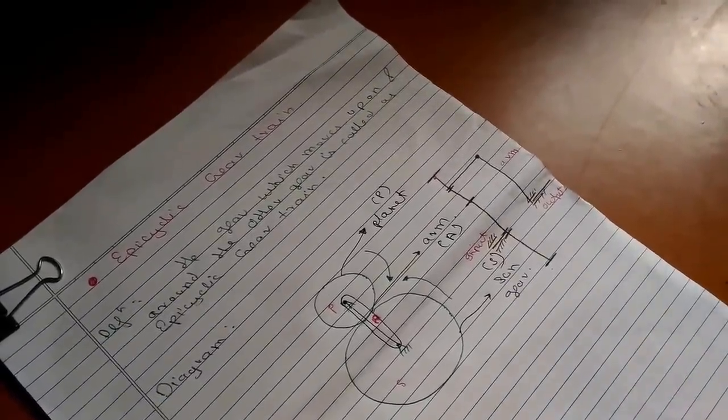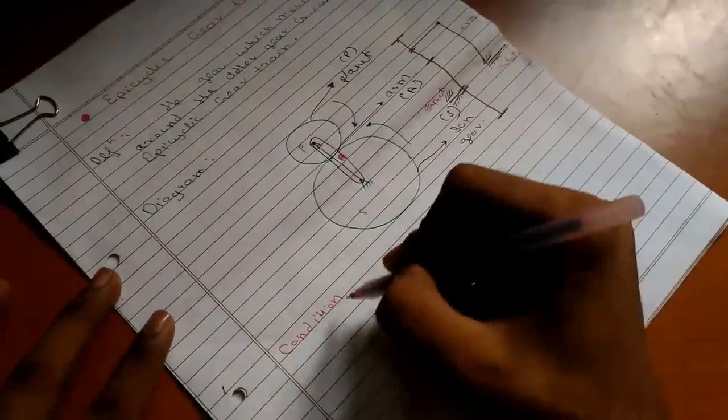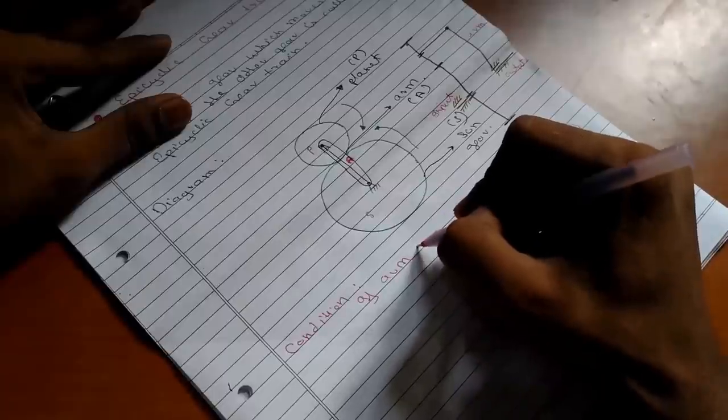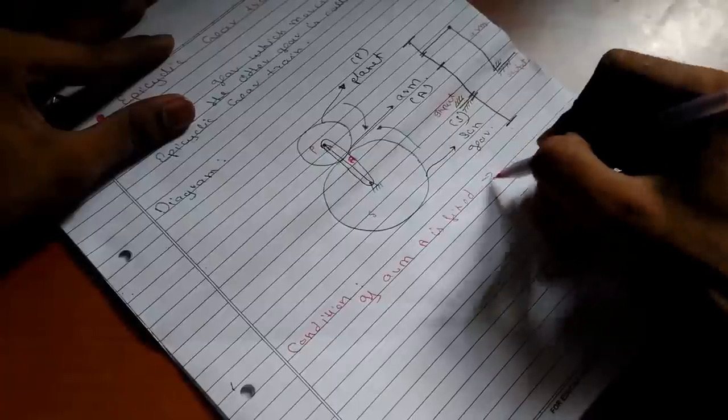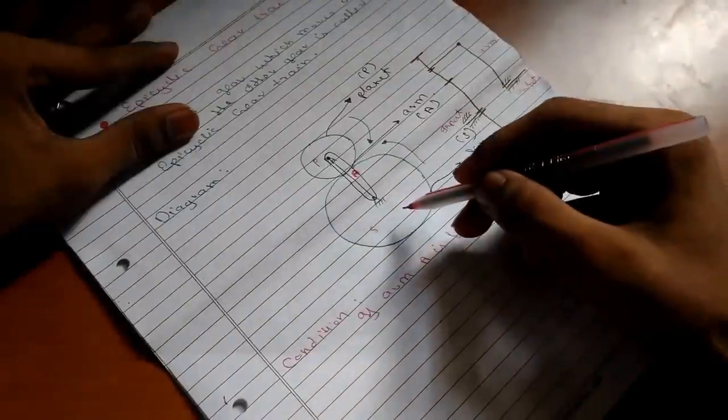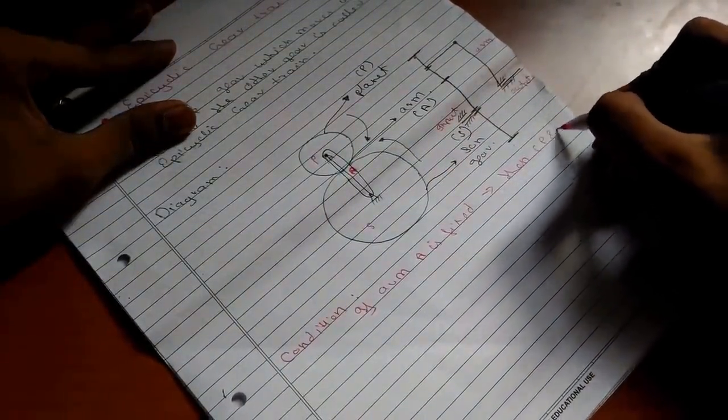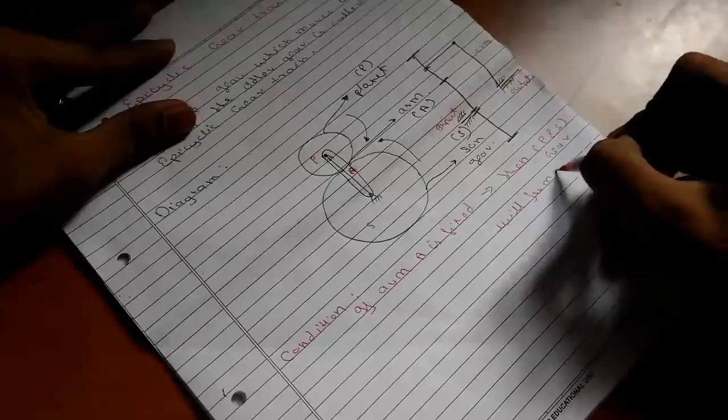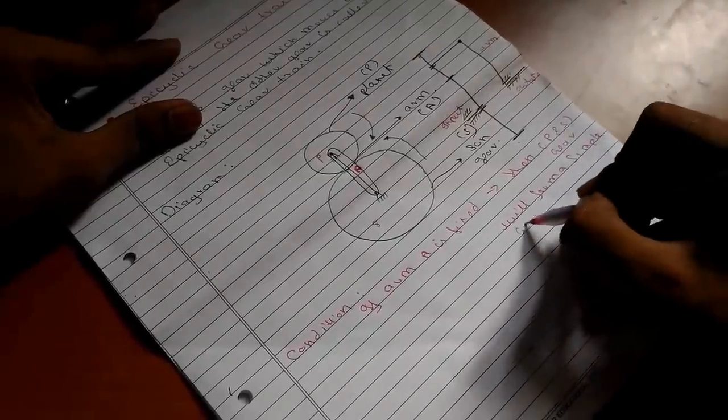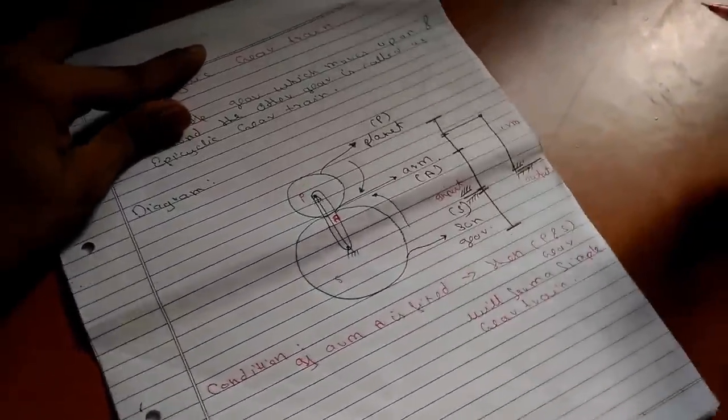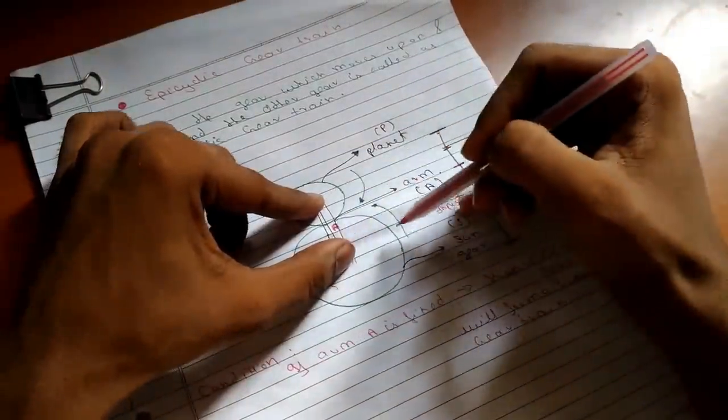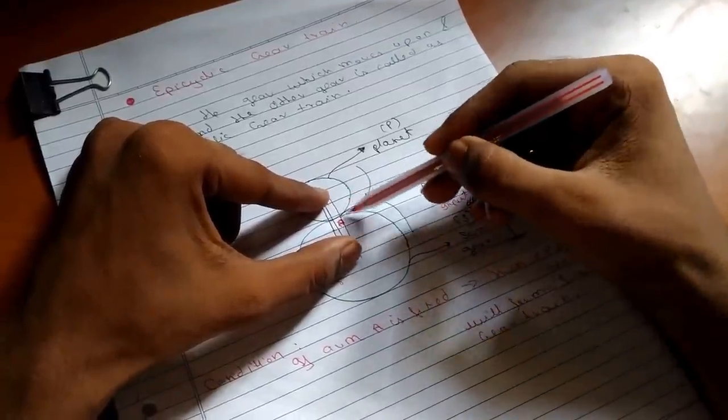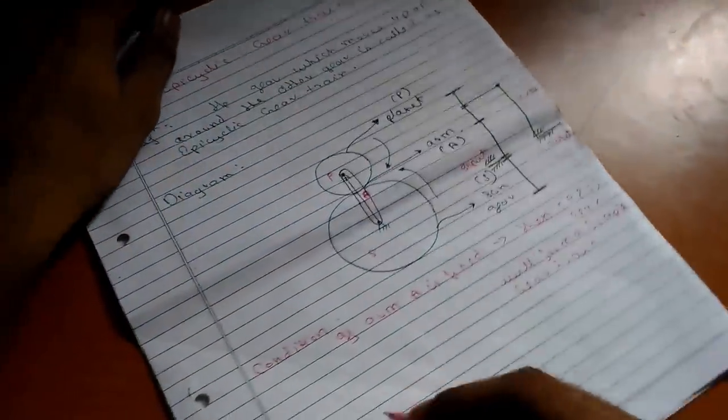And there are various conditions which we have to keep in mind. If arm A is fixed, then P and S gears will form a simple gear train. So you can see that if we fix the arm A, there is no relative motion between with respect to each other on the outer surface. It can be moved here, only this part, only between the two meeting parts. So it is called as a simple gear train.